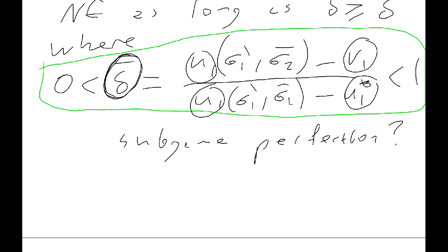And we need to take the max of the equivalent expression for delta two. Sorry, for player two. And that gives us a Nash equilibria. So, we know it's a Nash equilibria. Is it subgame perfect?